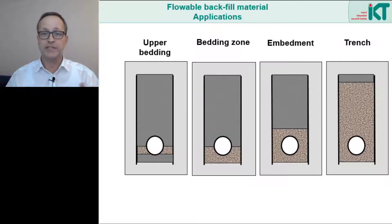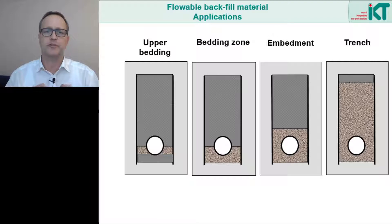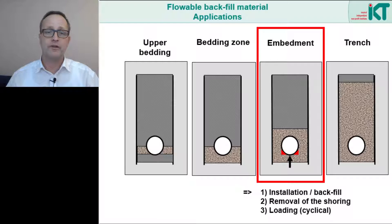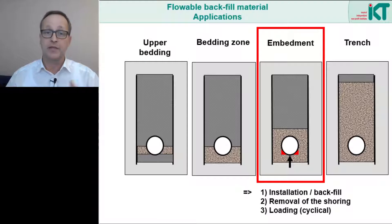Let us now take a look at the typical applications for flowable backfill. This begins with the bedding zone, continues with the complete embedment of the pipeline zone, and ends with the backfilling of the whole trench. For very large pipes, even just filling the upper bedding to support the pipe can be of interest. In deep trenches with smaller pipes, usually the whole pipe is embedded with flowable backfill, since good compaction is particularly important there. If the trenches are not as deep — for example when laying supply lines in the sidewalk area — then a complete backfilling of the trench with flowable material can be cost-efficient. Using flowable material for the embedment of the pipe is generally the most interesting, and we took a closer look at this case in a major research project.